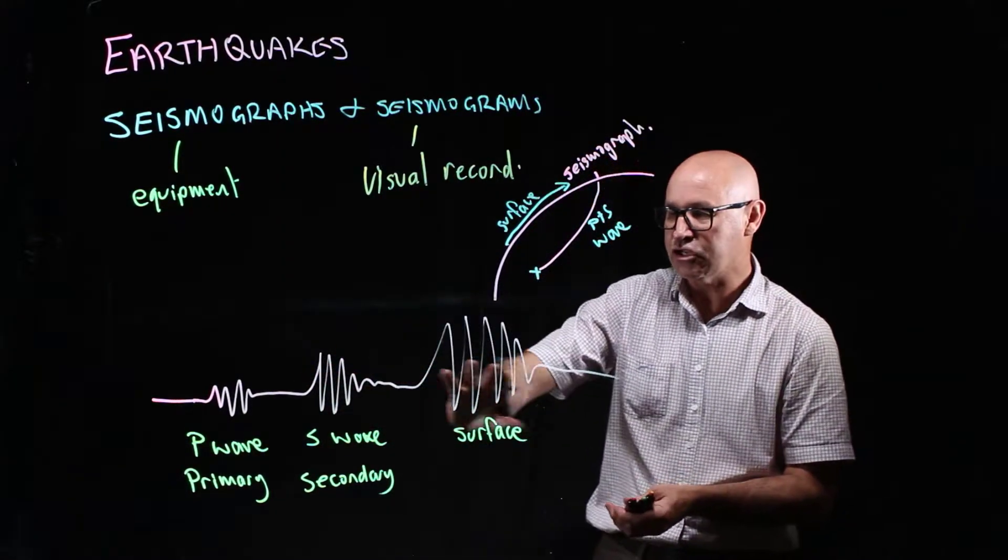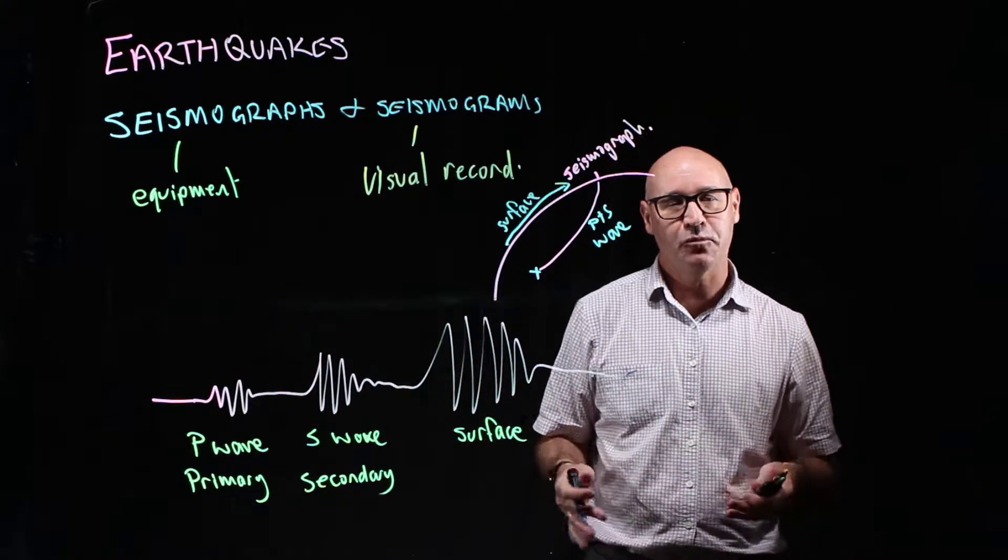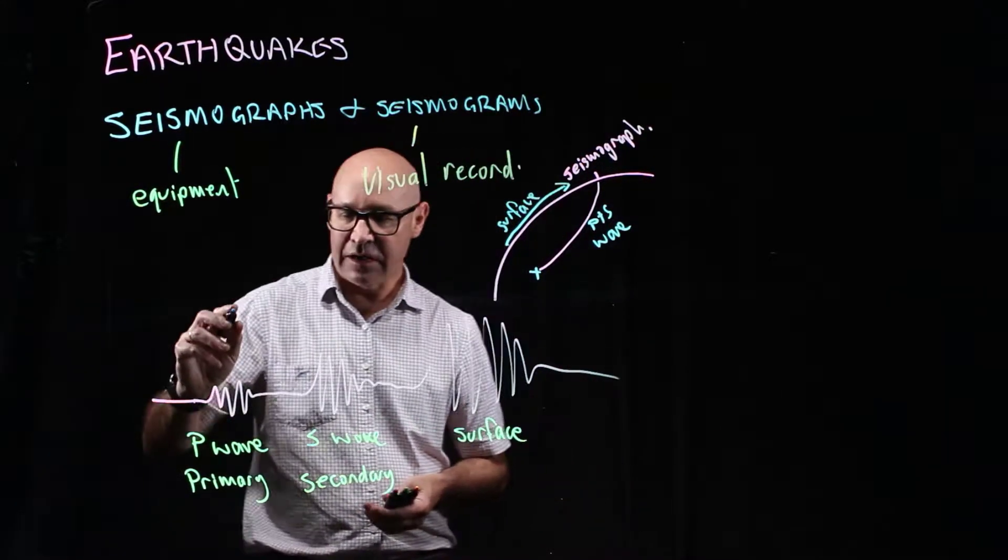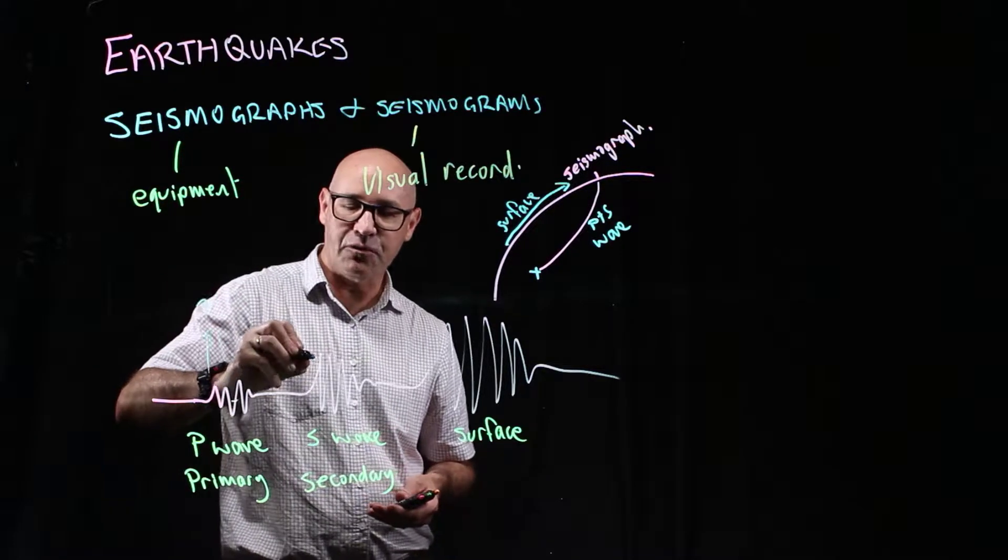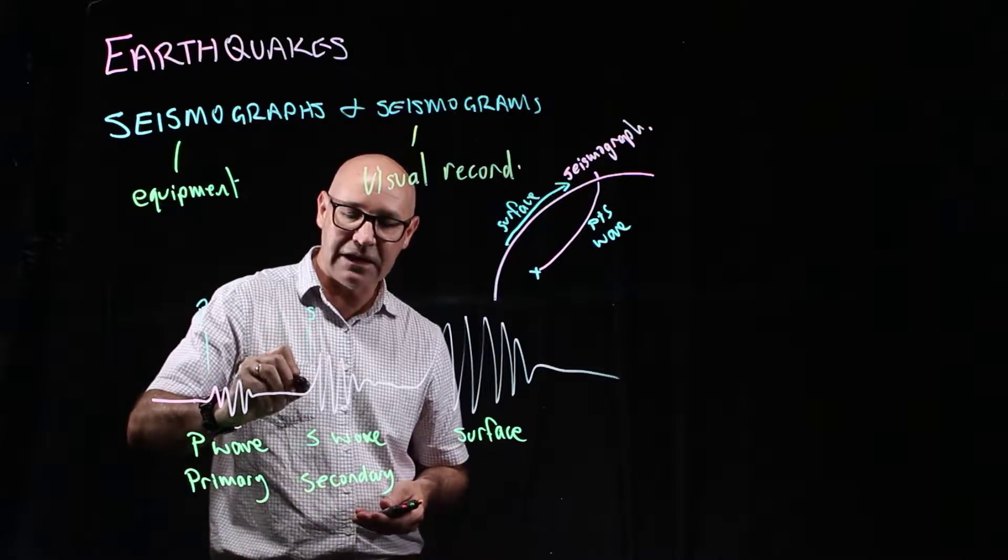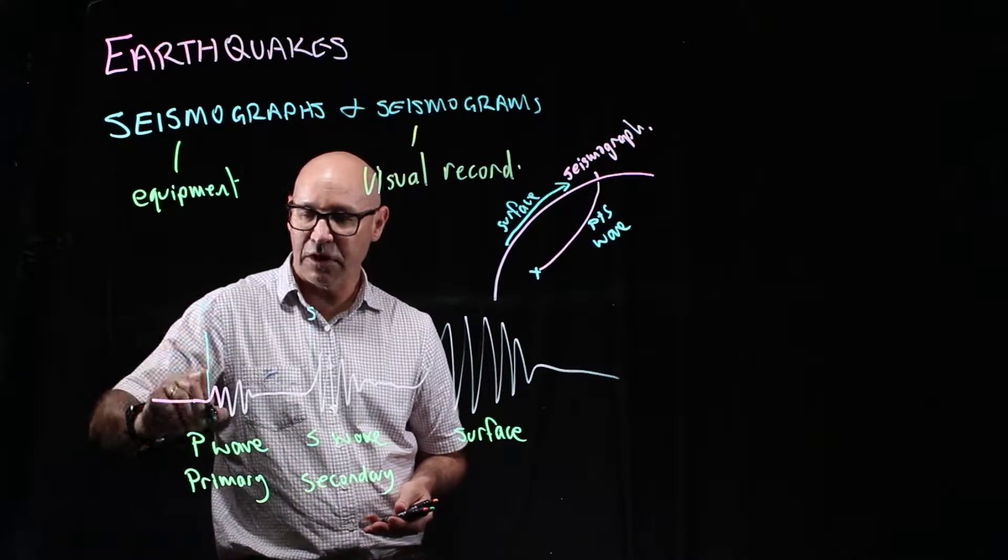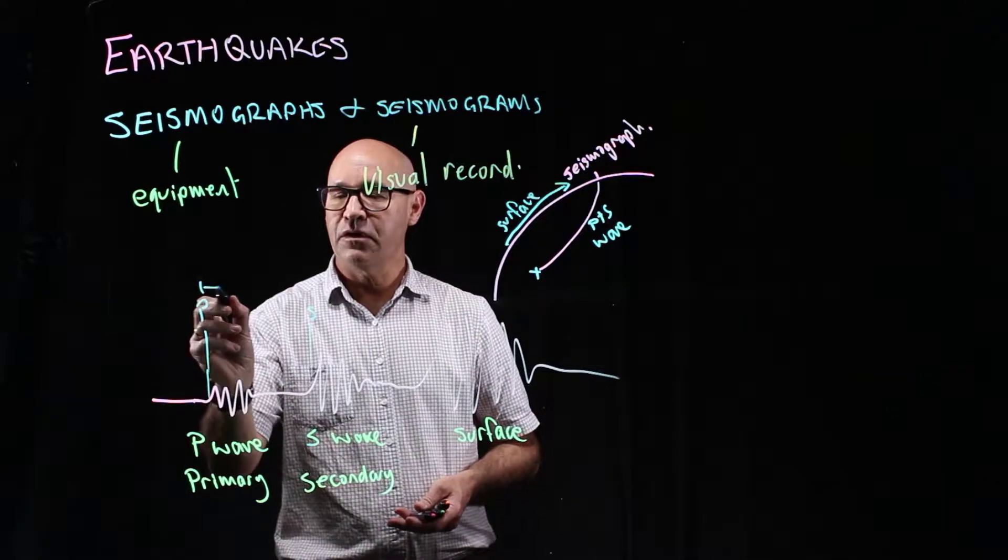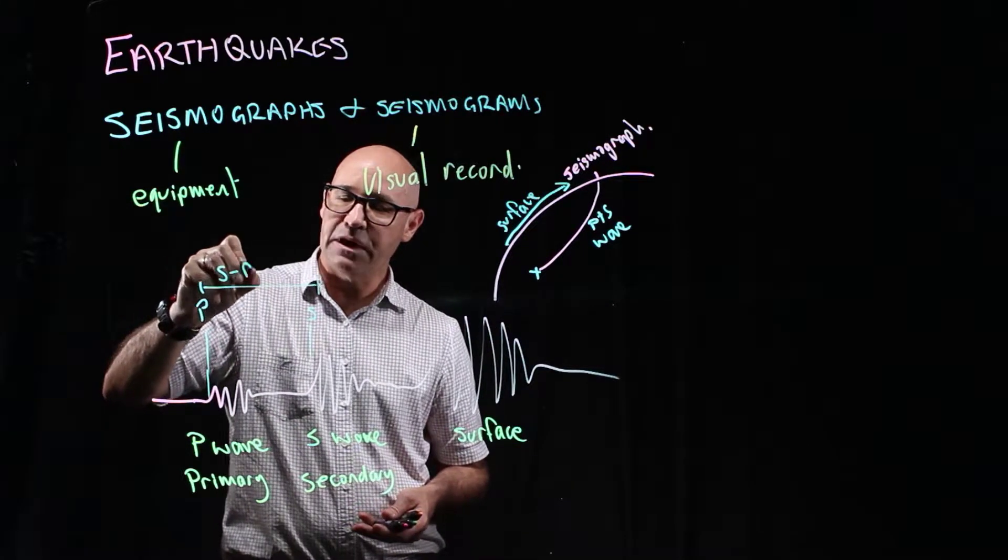So the information is all here that the scientists, the seismologists need to be able to work out the epicenter. They work out the time distance between the arrival of the P wave and the arrival of the S wave. So around about here, they have to look at it manually to be able to work it out. So that's the arrival of the P and that's probably around about the arrival of the S. So this interval here is a time interval and it's called the S-P interval.